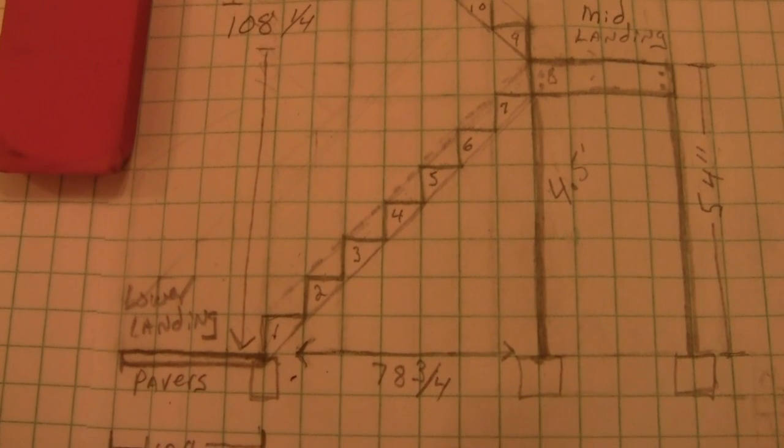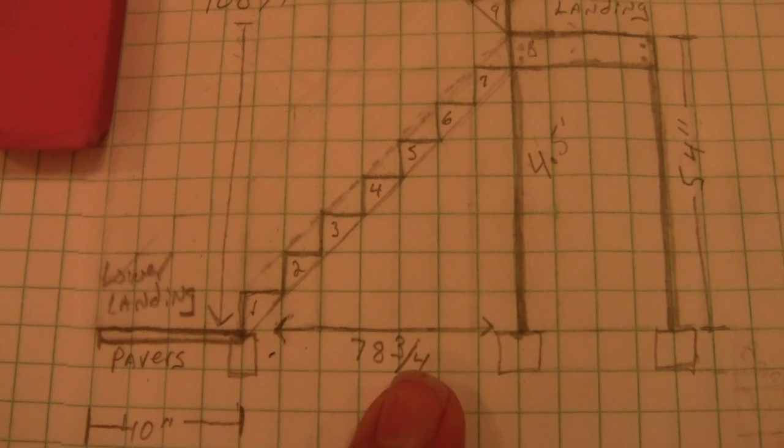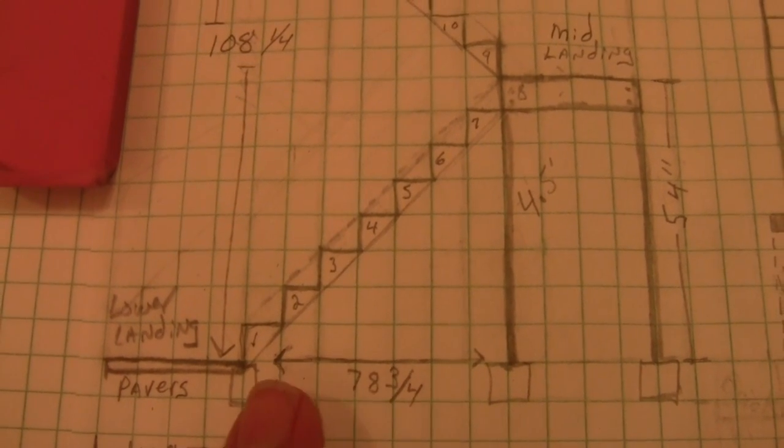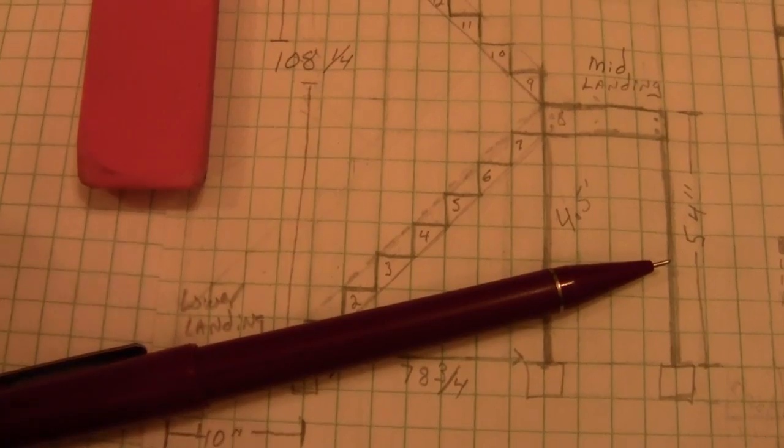And 7 steps will give me a distance of 78 and 3 quarter inches from the lower landing to the beginning of the mid-landing.